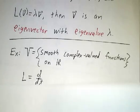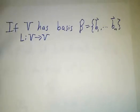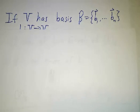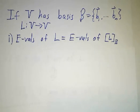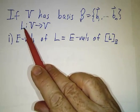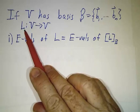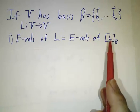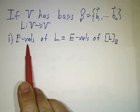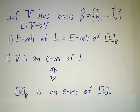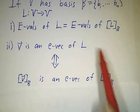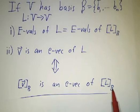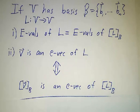Those are the definitions. Now, that example was an infinite-dimensional vector space. For a finite-dimensional vector space with a basis of n elements, we can look at the n by n matrix of L. The eigenvalues of that matrix are exactly the eigenvalues of the linear operator, and the eigenvectors of the matrix are the coordinates of the eigenvectors of the linear operator. So finding the eigenvalues and eigenvectors of the matrix essentially solves the problem for the operator.